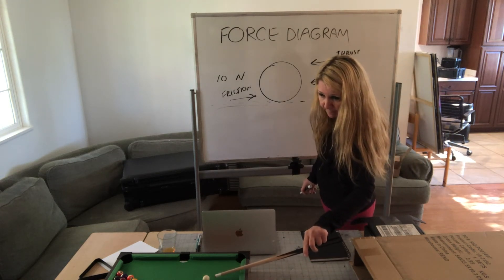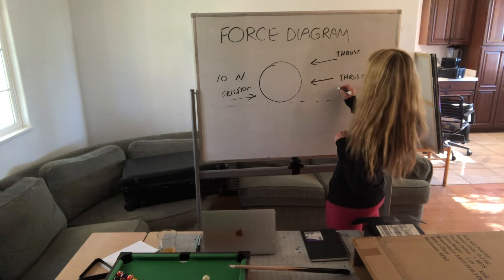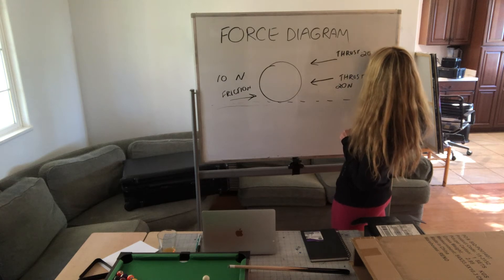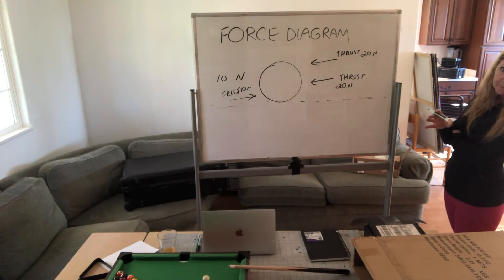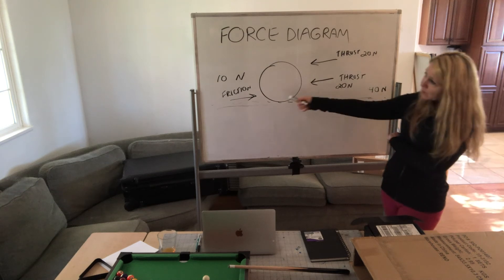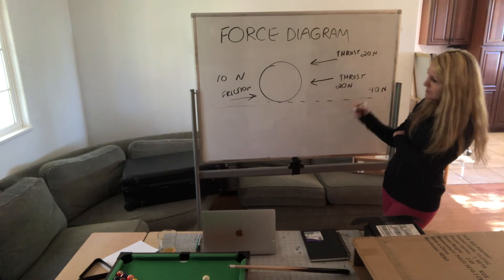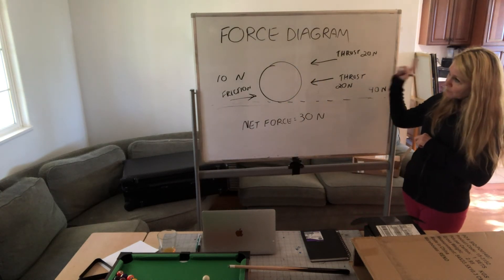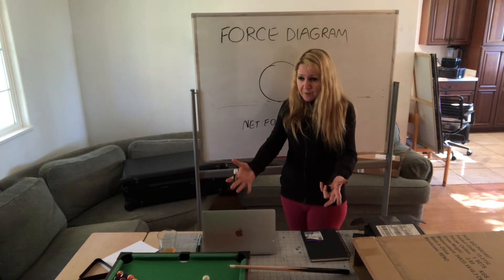Here's another example: two thrust forces are applied to the cue ball — one of 20 newtons and another of 20 newtons going the same direction, totaling 40 newtons on that side. The opposing force is 10 newtons. Since they're going opposite directions, you subtract: 40 minus 10 equals 30 newtons. The net force is 30 newtons to the left, in the direction of the larger force.